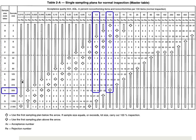For critical defects you said 0%, so no calculation needed — if you find even one critical defect, it's rejected. For major defects: if you find up to 14 defects it's accepted; if you find 15 or more it's rejected. For minor defects, the numbers are 21 and 22: 21 or below is accepted, 22 or above is rejected.